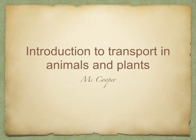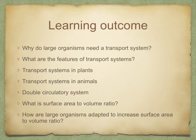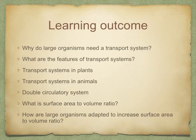In this topic, we're going to look at an introduction to transport in animals and plants. We're going to look at why large organisms need a transport system, what are the features of transport systems, transport systems in plants and animals, the double circulatory system, and just to recap the surface area to volume ratio and how large organisms are adapted to increase the surface area to volume ratio.